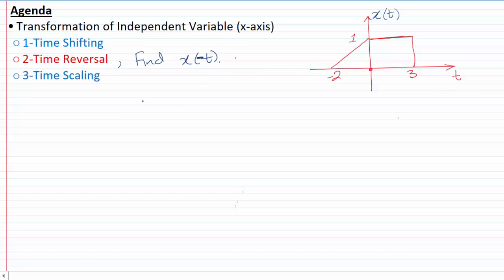So let's just do it. Remember that the time reversal is nothing but flipping the signal about the origin, or about t equals zero. So if I flip this signal about t=0,